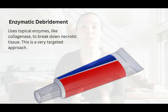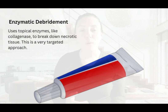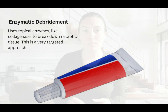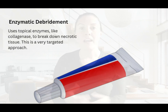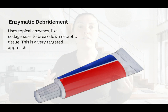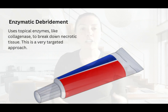Then we have enzymatic debridement. This method uses topical enzymes like collagenase to break down necrotic tissue. It's a very targeted approach and can be a good option for more stubborn wounds where autolytic debridement is taking too long. Enzymatic debridement is generally safe for use on various wound types and can be an excellent option for patients who need faster debridement.